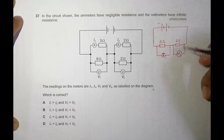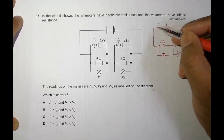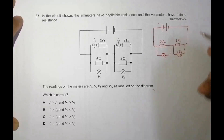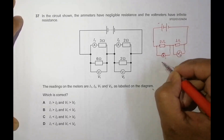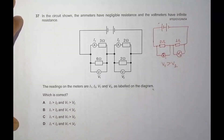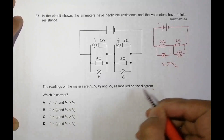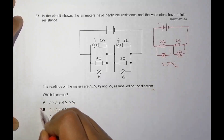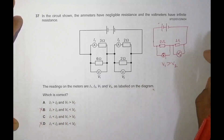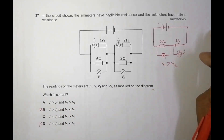Whatever the value of EMF, the current is the same through both equivalent resistances. So the voltage will be in proportion to the resistance, which means V1 should be more than V2. This disqualifies choices B and D, so only choices A and C remain.